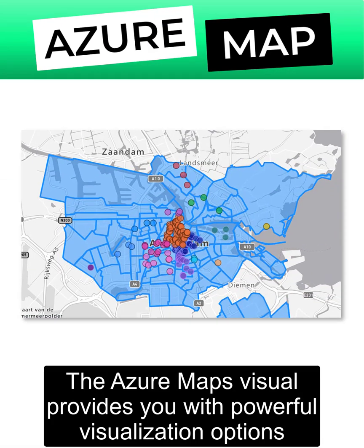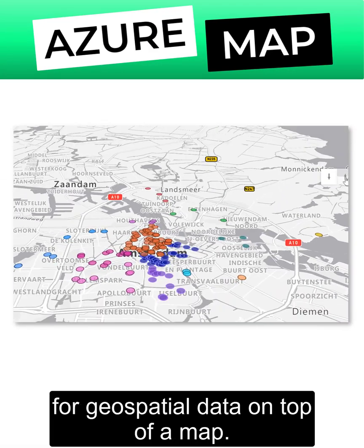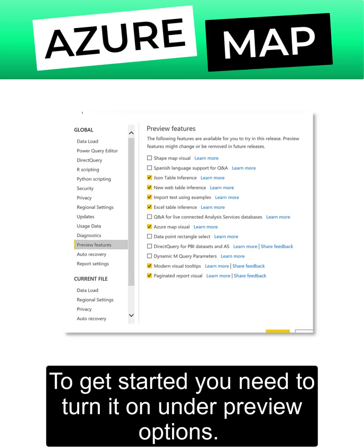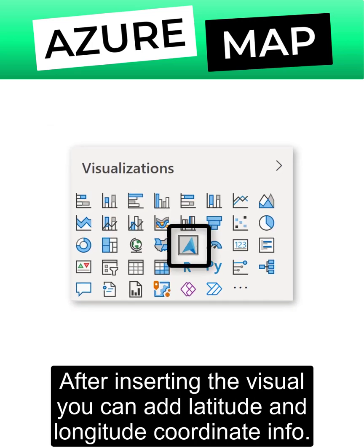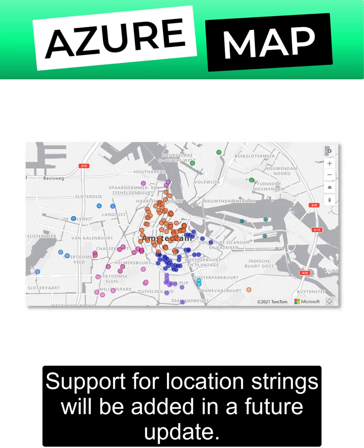The Azure Maps Visual provides you with powerful visualization options for geospatial data on top of a map. To get started, you need to turn it on under Preview Options. After inserting the visual, you can add latitude and longitude coordinate information.